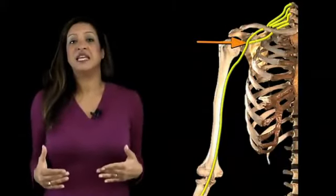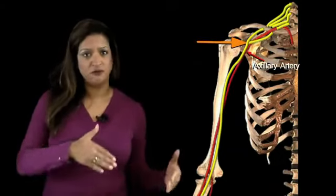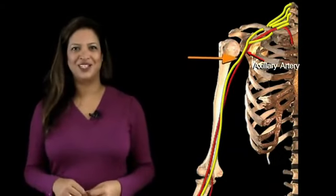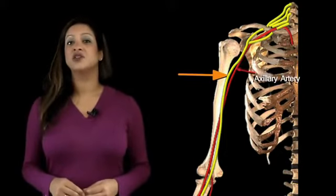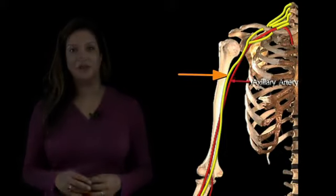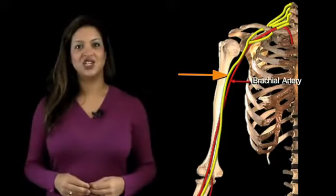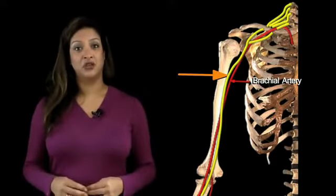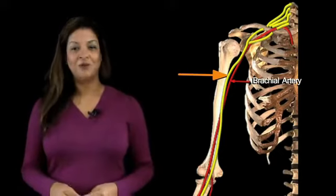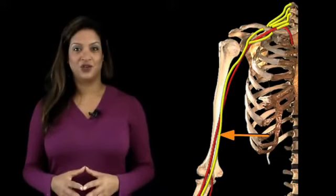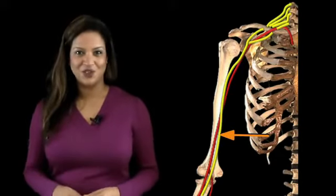Once it's formed, the median nerve lies immediately anterior to the axillary artery, but very quickly moves lateral to the axillary artery. As it continues down the arm, the axillary artery turns into the brachial artery. So the median nerve lies initially lateral to the axillary artery, and then lateral to the brachial artery. But about halfway down the arm, the median nerve crosses over so it now lies medial to the brachial artery.